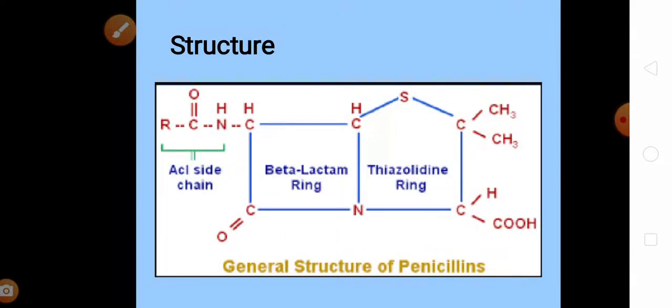Now I would like to discuss the mode of action of penicillin. Penicillin has an antimicrobial activity. It inhibits the cell wall synthesis of gram positive bacteria by hindering the peptidoglycan synthesis. Penicillin is a bacteriostatic antibiotic.